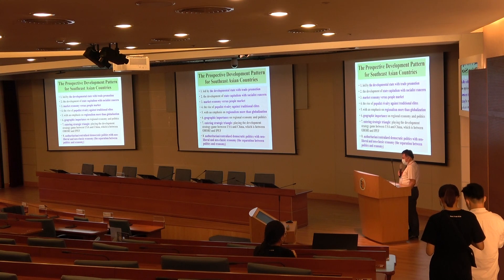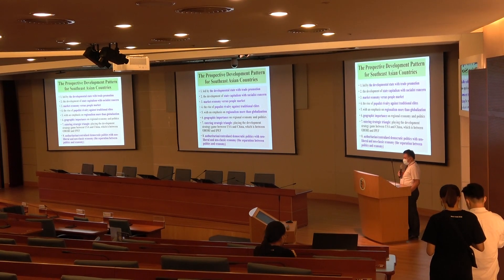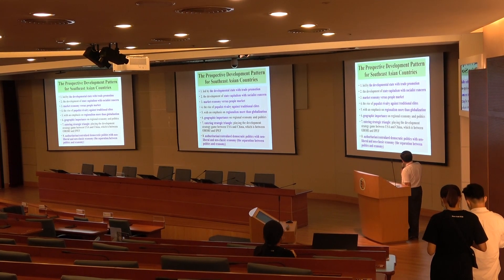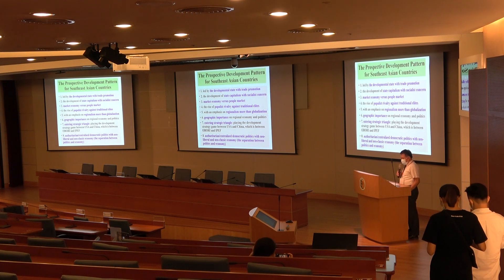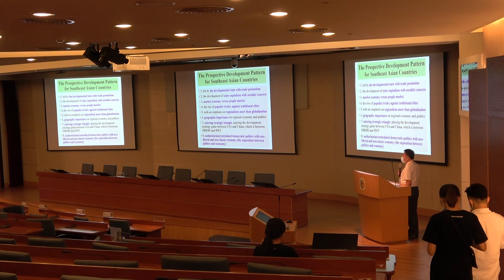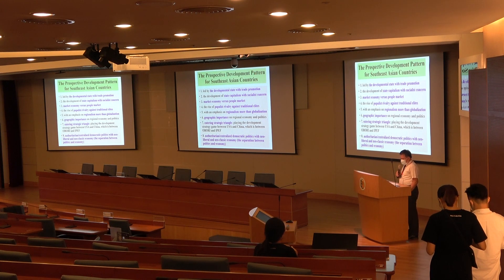Number four is the rise of populist rivalry against traditional elites, which has happened in every developing country so far. Number five emphasizes regionalism or regionalization over globalization, since many countries now doubt the influence of globalization. Number six is the geographic importance on regional economy and politics — how to bring geographic research back into our area.